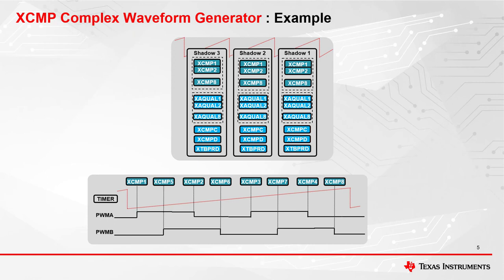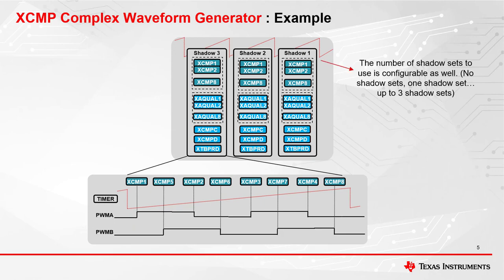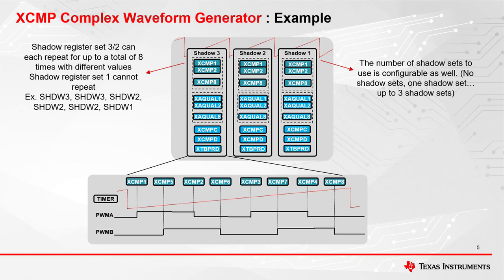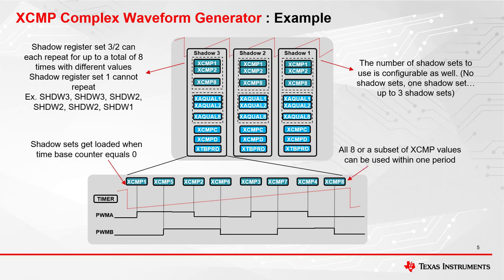Now let's look at the loading schemes when this mode is enabled. Type 5 shadow loading will have up to three shadow register sets. There is configurability to set the number of shadow register sets to use — for example, you can have no shadow sets, one shadow set, two shadow sets, or three shadow register sets. You can repeat shadow register set 3 up to 8 times, and the same applies for shadow register set 2. Each shadow register set is able to hold different values, providing more flexibility with generating different waveforms occurring each period. The shadow register sets get loaded only at one event, when the time-based counter equals 0. All 8, or a subset of 8, of the XCMP values may be used within one period.